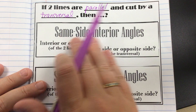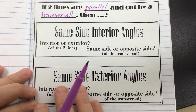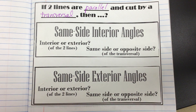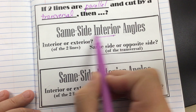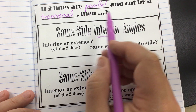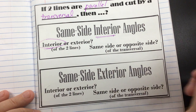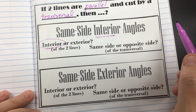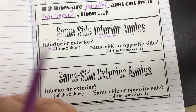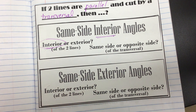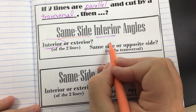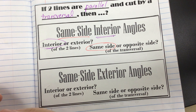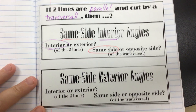On page 17 we have same side interior angles and same side exterior angles. For same side interior: the word interior gives it away — they are interior angles, meaning both between the two lines. And since it says same side, they are on the same side, not opposite sides but same side of the transversal.